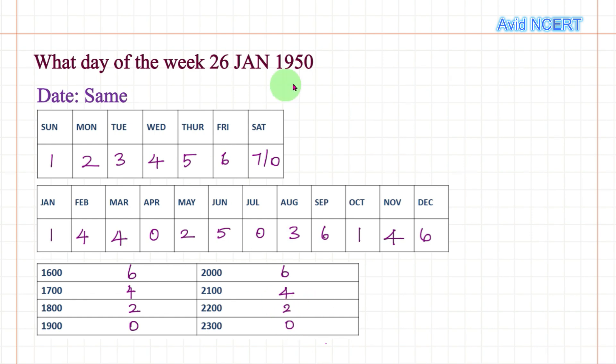We're going to apply everything in the code and we'll get the answer. So 26, date as is, so it is 26. January, the code for January is 1, so let's take it as 0, 1 for easy calculation.